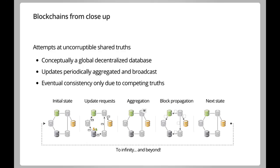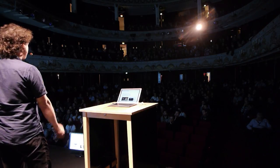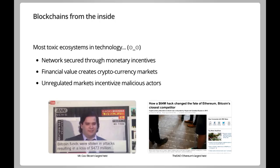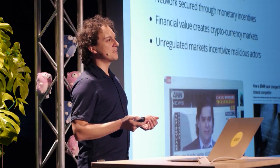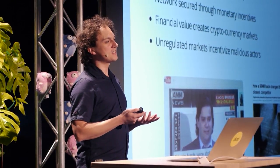This seems like an amazing technology, but let's look a bit closer. It turns out that blockchains are kind of the most toxic ecosystems in technology. Blockchains are monetarily incentivized — every blockchain has a virtual currency assigned to it, and whenever somebody helps the blockchain, they get rewarded in virtual currency. This creates a market for that currency, and if there's a market, you can speculate on the price. If you can speculate on the price, then vulnerabilities all of a sudden become much more interesting — because if you find one, do you report it or do you short the market?